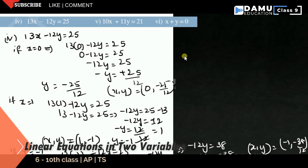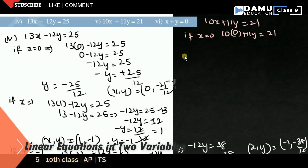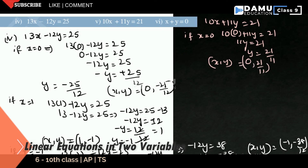The fifth equation is 10x + 11y = 21. If x = 0, then 11y = 21, giving y = 21/11. The first solution is (0, 21/11).